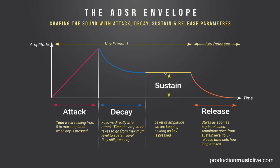Then we enter sustain, and sustain is very different from those three parameters, because it is not a time parameter — it is a level. It doesn't have to do anything with time; it could be lasting for hours. Sustain is in decibels. We are holding the signal on while we are still pressing the key.